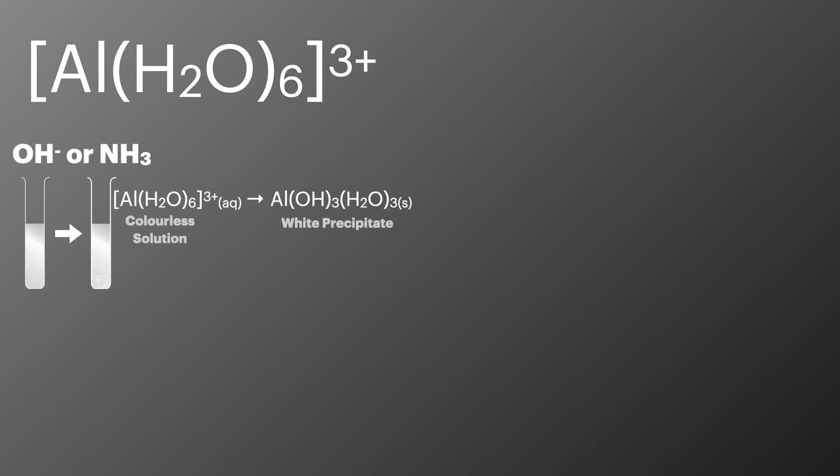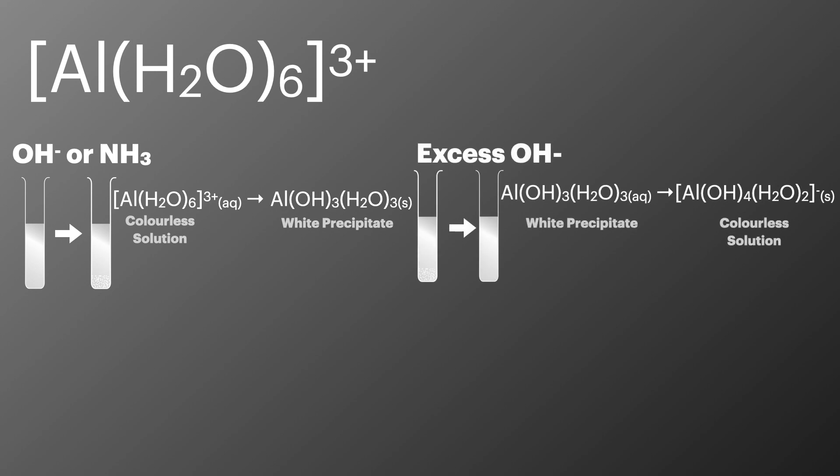When aluminium aqua complex is hydrolyzed with hydroxide ions or ammonia it forms a white precipitate of aluminium hydroxide. This is also amphoteric so when we add an excess of sodium hydroxide or hydroxide ions to it, it then goes back to forming a colourless solution. If we add an excess of ammonia we see nothing really happens, there's no change.